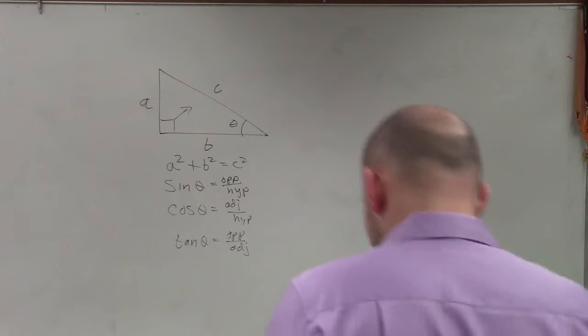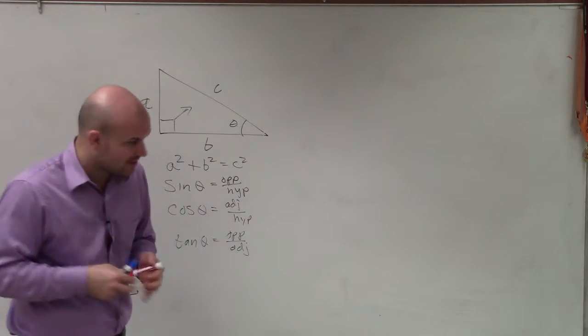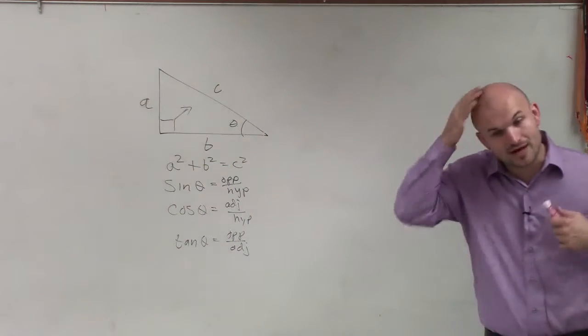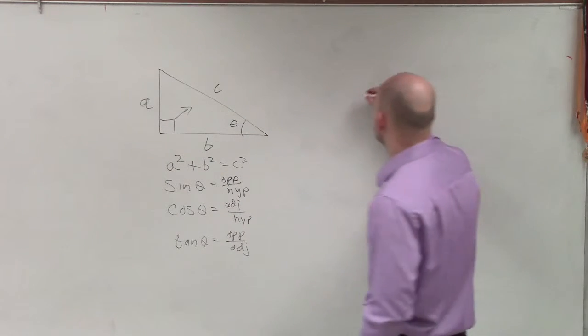Well, the first one that we're going to go over is what we call an acute triangle. But it's not a right triangle, because remember, an acute triangle just has to have all acute angles. This is what we're going to call an acute oblique triangle.